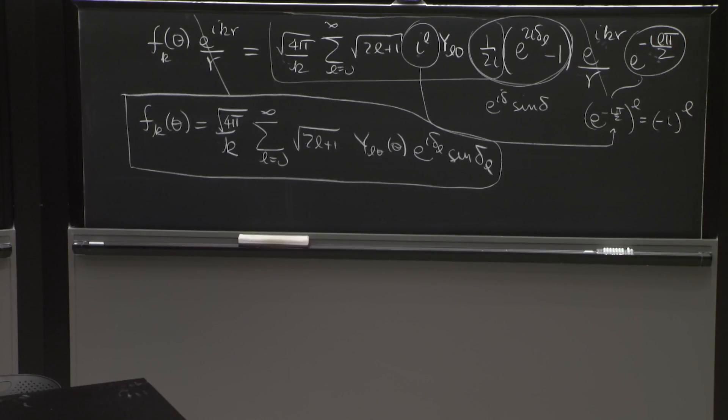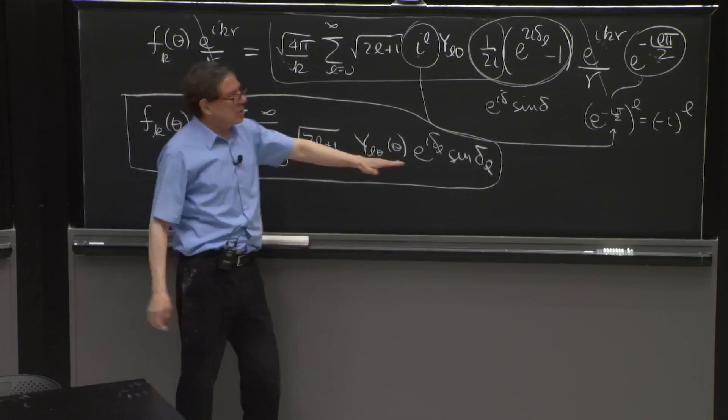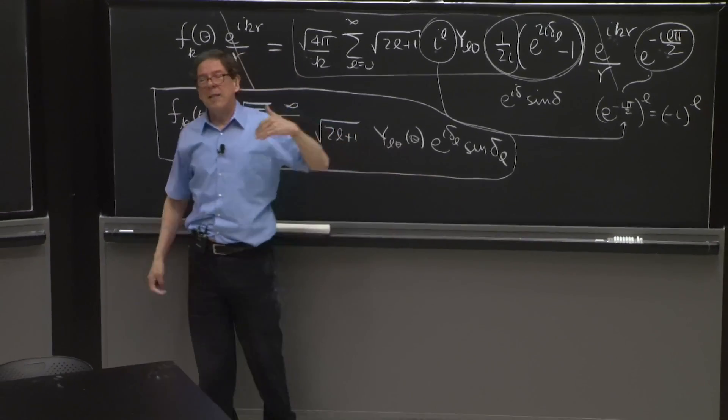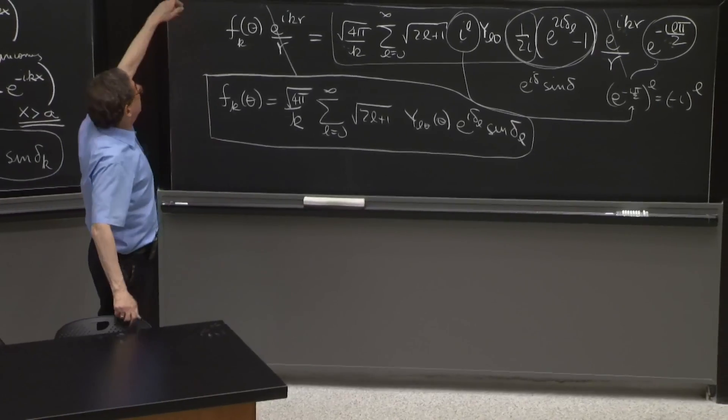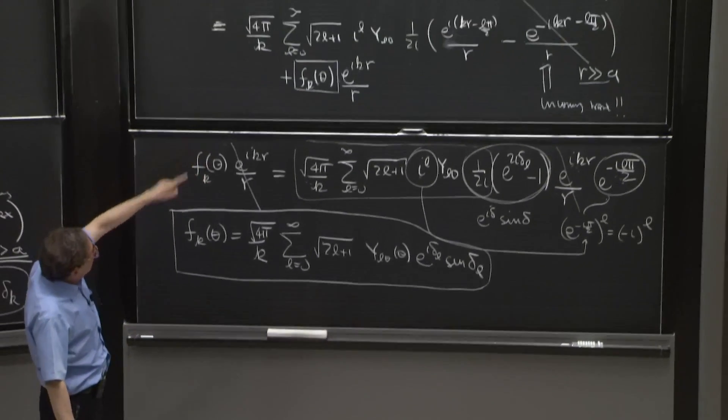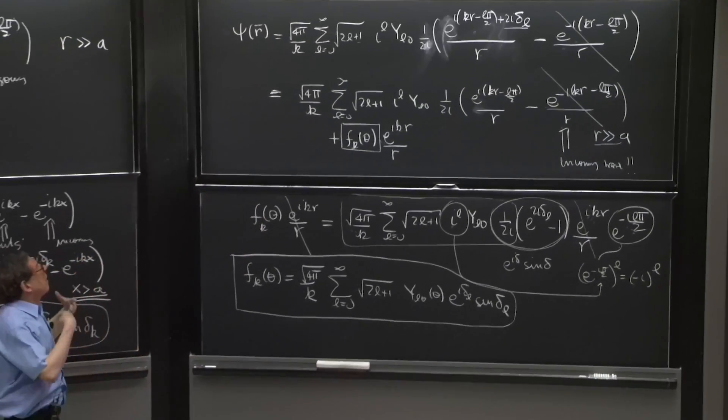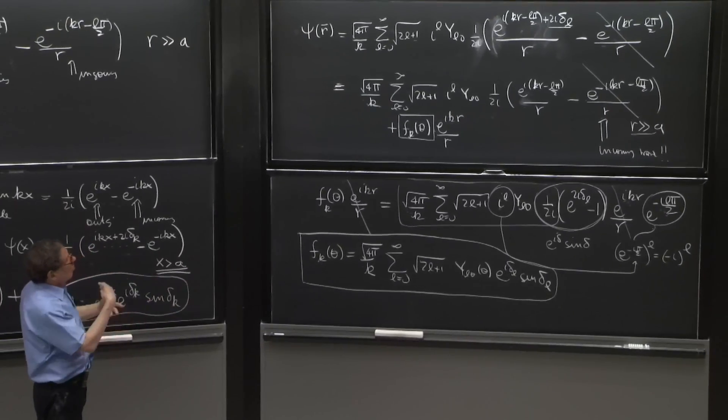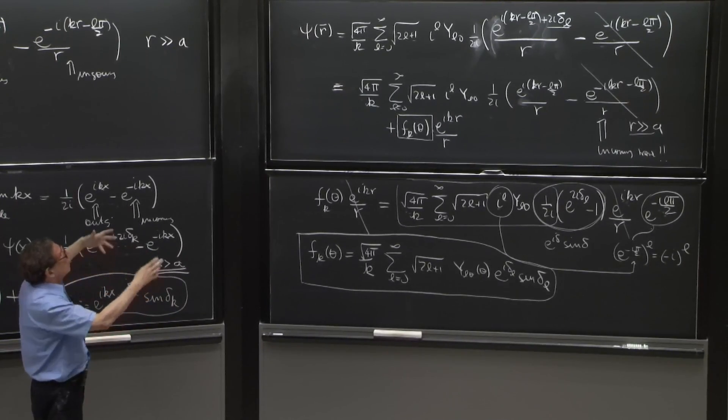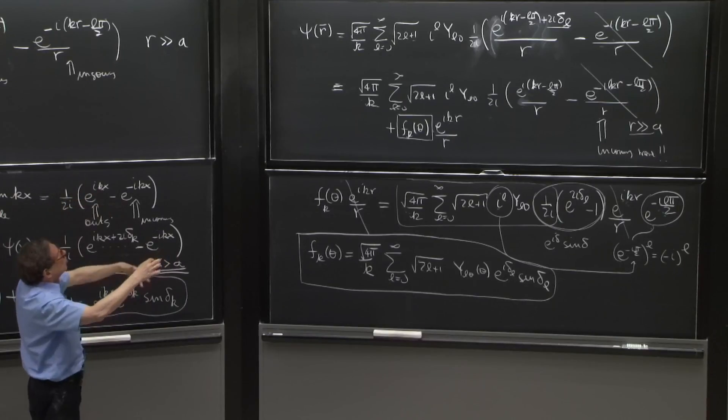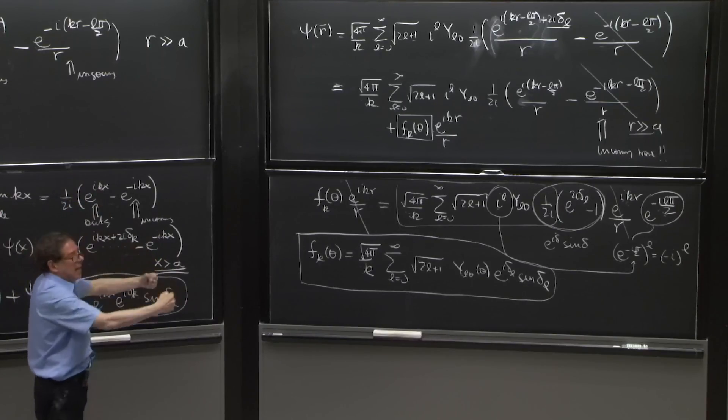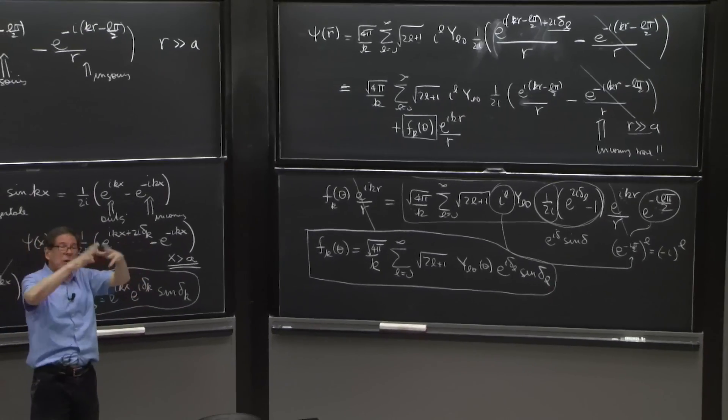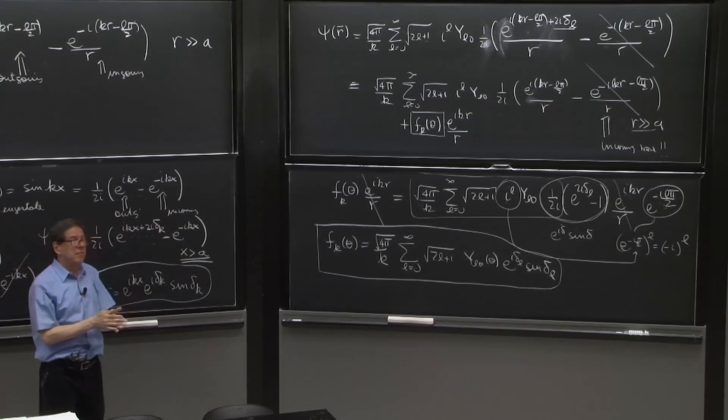So what have we achieved? We want f of k because that gives us the cross section. What we have figured out is that the calculation of f_k really requires knowing the phase shifts. And the phase shifts are defined by that formula over there, where we have estimated how one wave is connected to the other one, the incoming and the outgoing for a given fixed L, for a given partial wave, how they're offset by this phase shift.